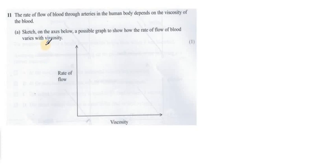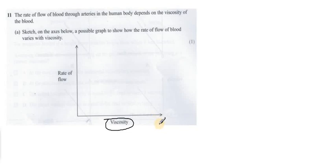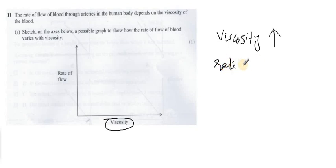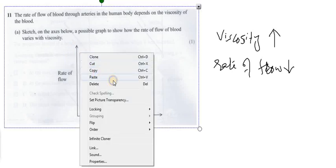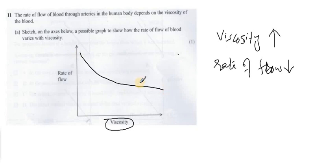Question 11: the rate of flow of blood through arteries in the human body depends on viscosity of the blood. Sketch a possible graph to show how the rate of flow varies with viscosity. We have rate of flow on the y-axis and viscosity on the x-axis. Viscosity is basically resistance in flow, so increasing viscosity means resistance increases, and rate of flow decreases. They are inversely related, so we can expect an inverse relationship graph.